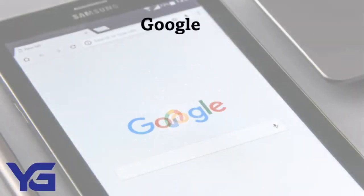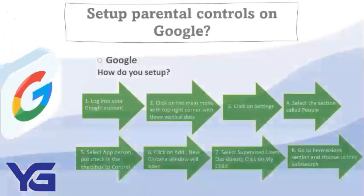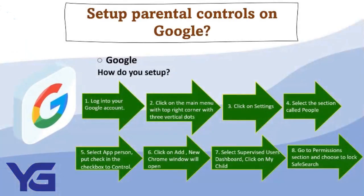Google: Setting up parental control in Google is a must to prevent our kids from visiting unnecessary websites that are available online. In order to set up SafeSearch, follow the steps. Step 1: Log into your Google account. Step 2: Click on the main menu button in the top right-hand corner with three vertical dots. Step 3: Once the drop-down menu appears, select Settings.